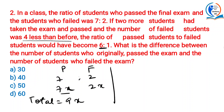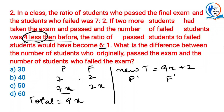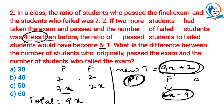If 2 more students had taken the exam, the new total would be 9x + 2. The new number of failed students is 2x − 4. In the second scenario, the total number of students who passed is total minus failed: (9x + 2) − (2x − 4) = 7x + 6.